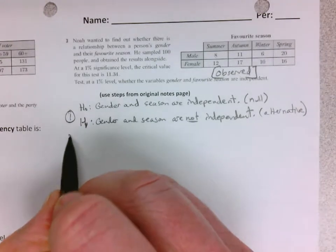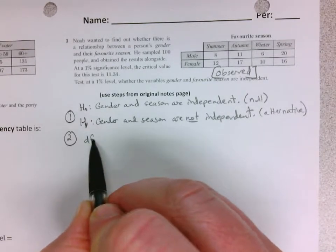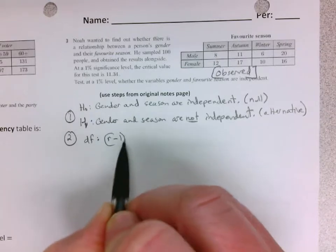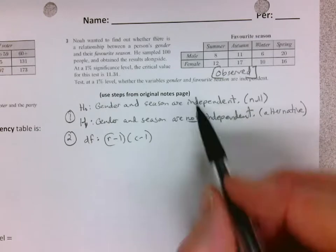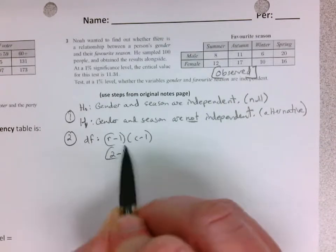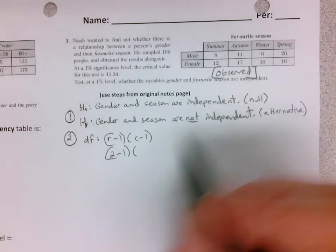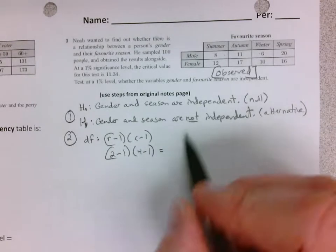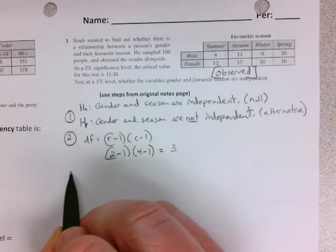Step two, calculate degrees of freedom. And your calculator will tell you, but let's practice showing the work because they'll ask you to verify this sometimes. Rows minus one times columns minus one. So there's two rows and there are one, two, three, four columns. So degrees of freedom is one times three, and that is going to affect where we look at on our table to get our value.